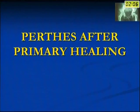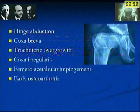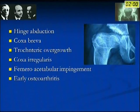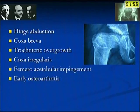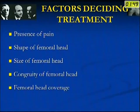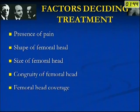What about Perthes after primary healing? These are the type of cases seen in examinations. The problems are hinge abduction, coxa breva, trochanteric overgrowth, coxa irregularis, femoroacetabular impingement, and early osteoarthritis. The factors that decide treatment are presence of pain, the shape of the femoral head, the size of the femoral head, congruity, and femoral head coverage.